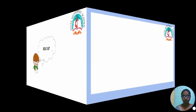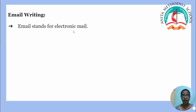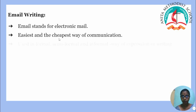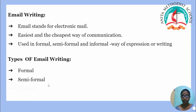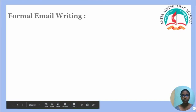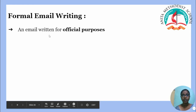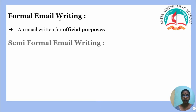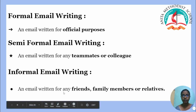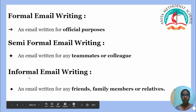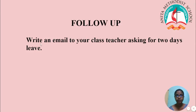Now let us recap the topic. Email stands for electronic mail. It is the easiest and cheapest way of communication. It is used in formal, semi-formal, and informal ways of expression or writing. Types of email writing: formal email writing, semi-formal email writing, and informal email writing. Formal email is written for official purposes. Semi-formal email is written for teammates or colleagues. Informal email is written for friends, family members, or relatives. Today's follow-up work will be to write an email to your class teacher asking for a two-day leave.